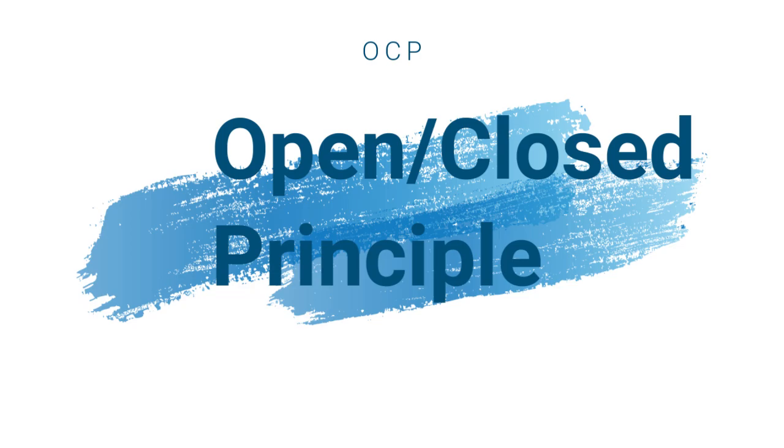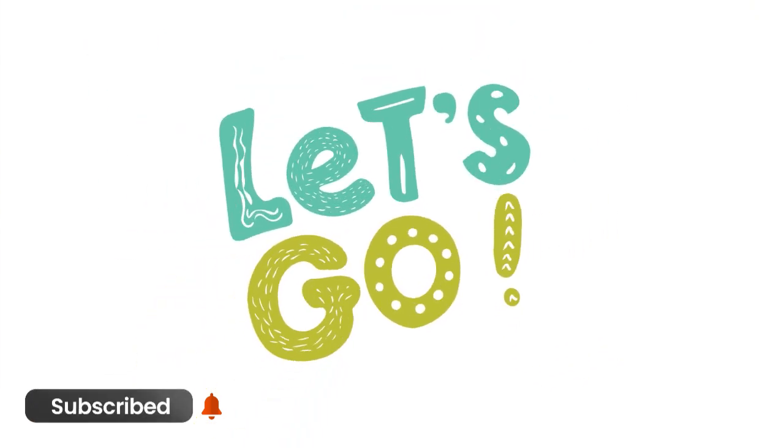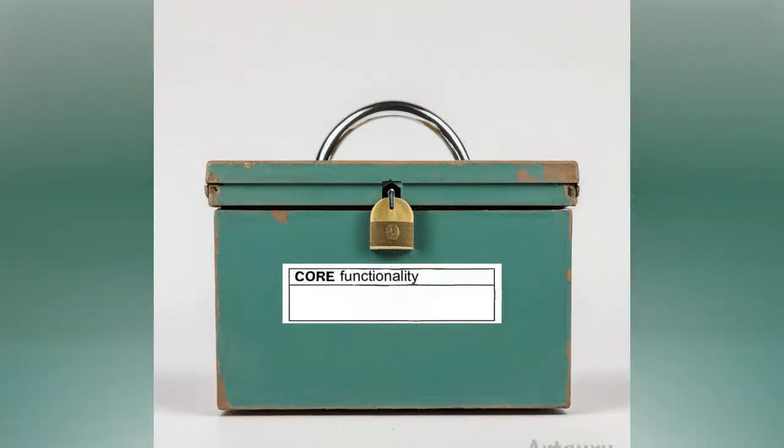Open-Closed Principle. Software entities should be open for extension but closed for modification. Let's discuss this with an example. This box, indicating that it cannot be changed or modified.